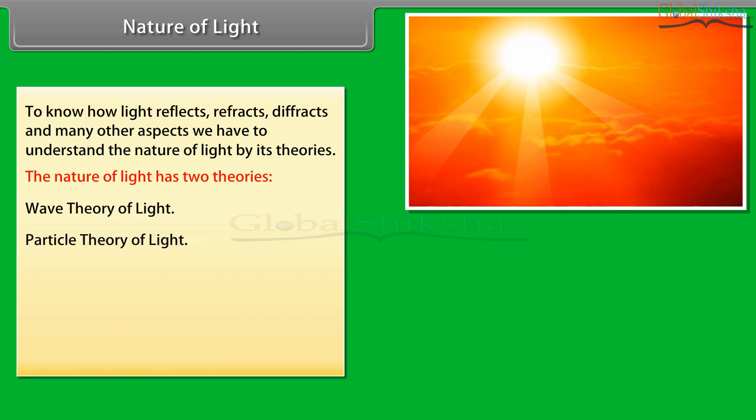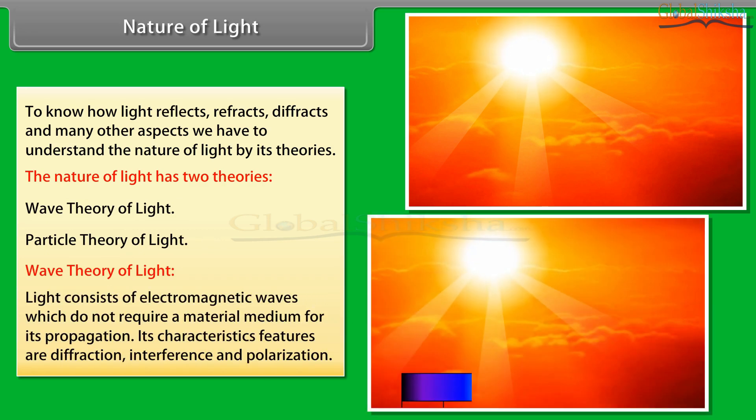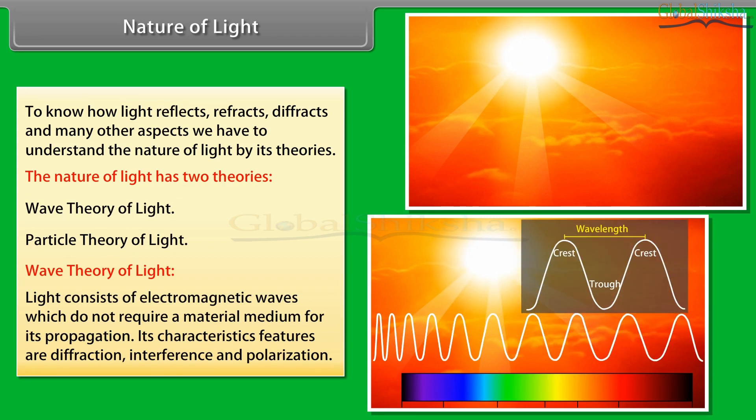Wave theory of light: Light consists of electromagnetic waves which do not require a material medium for its propagation. Its characteristic feature is diffraction.